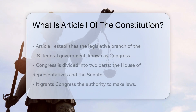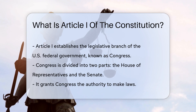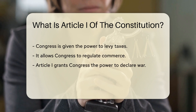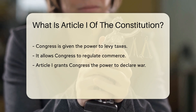Article 1 of the United States Constitution establishes the legislative branch of the federal government, known as Congress. It outlines the powers, structure, and functions of Congress, including the House of Representatives and the Senate. Article 1 grants Congress the authority to make laws.